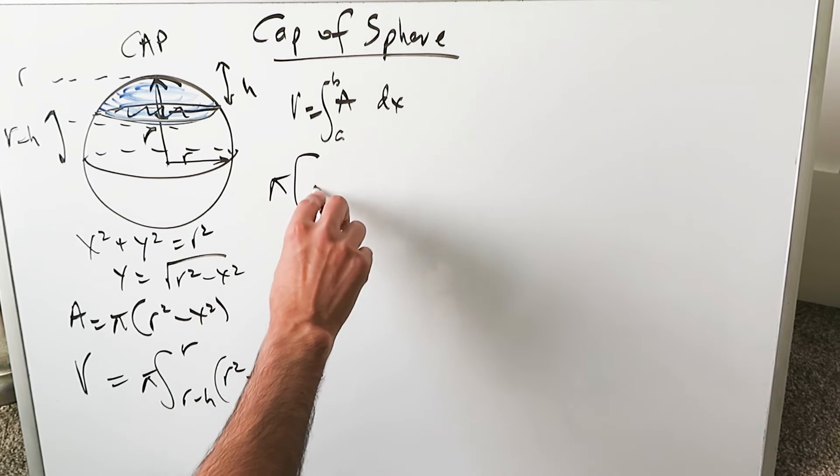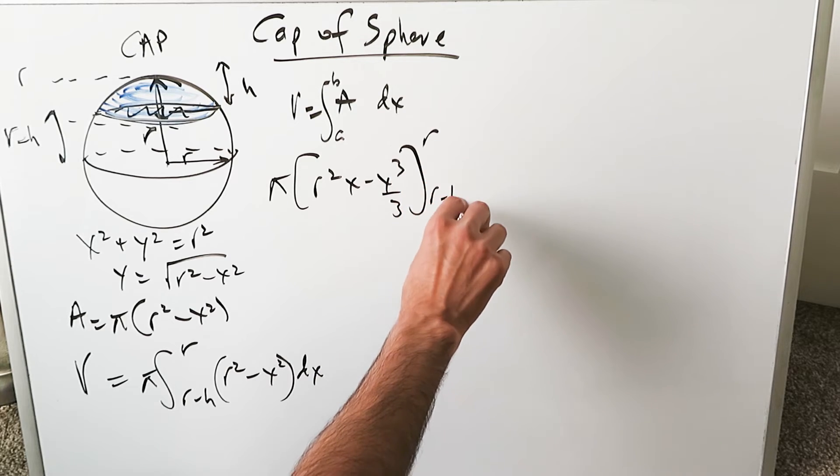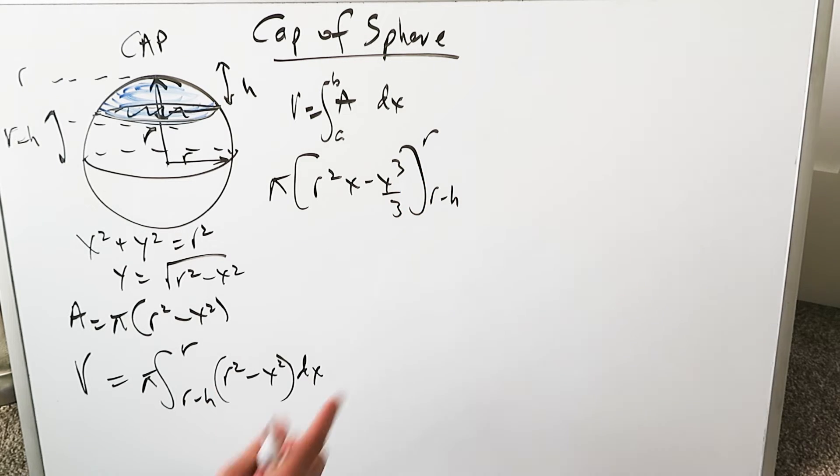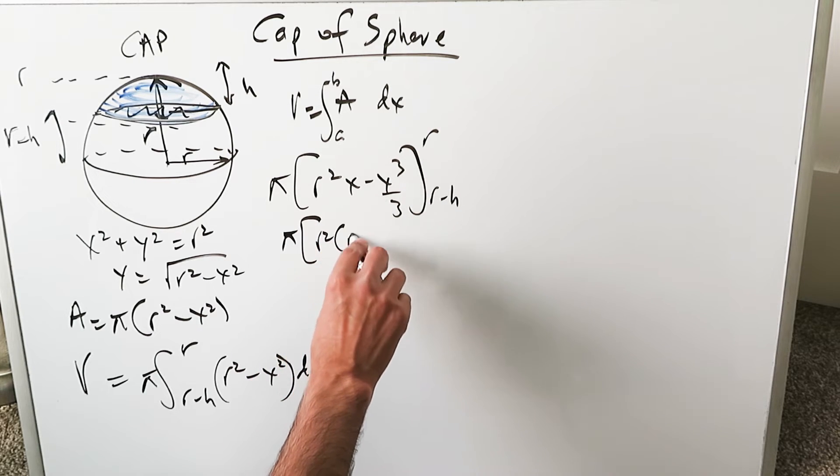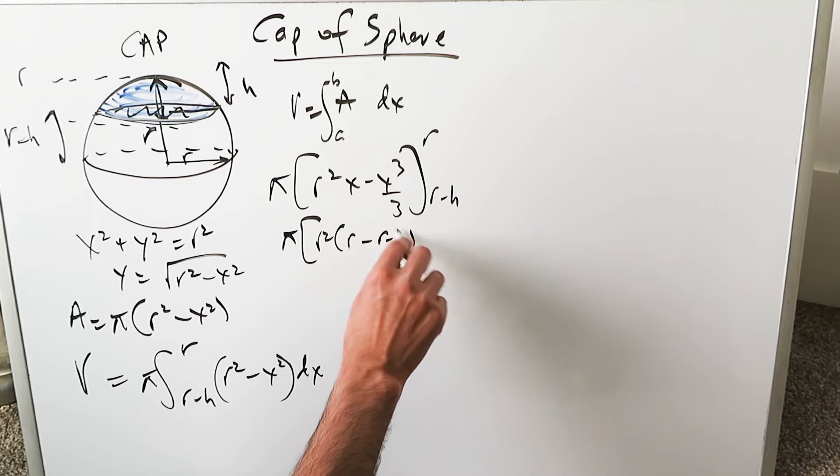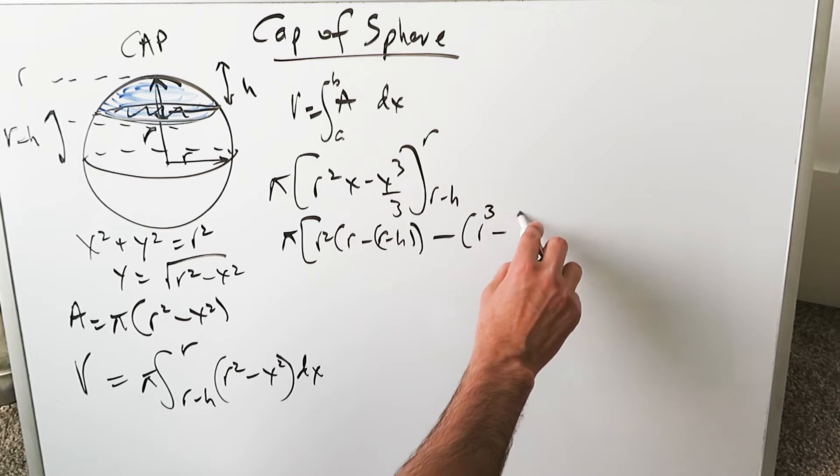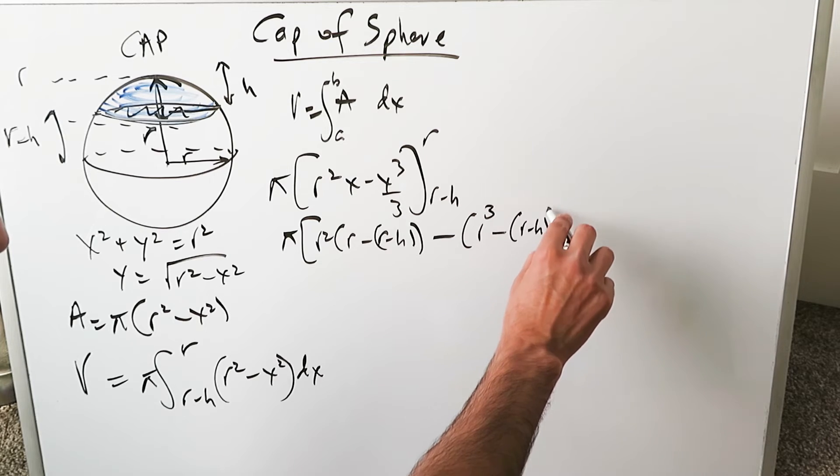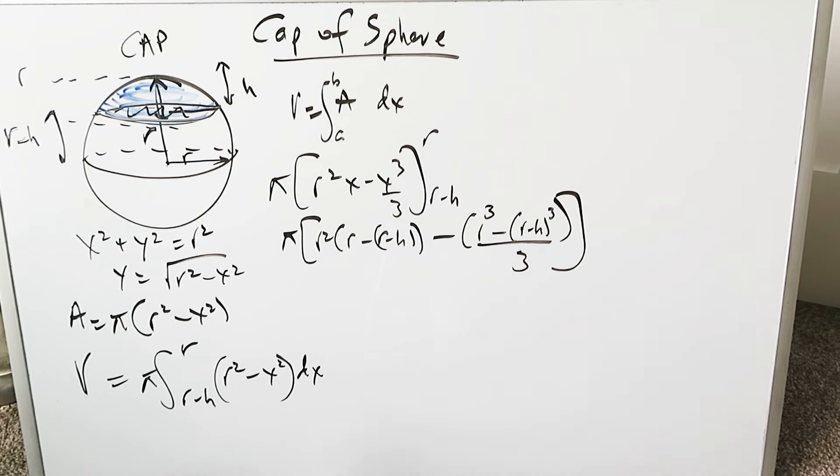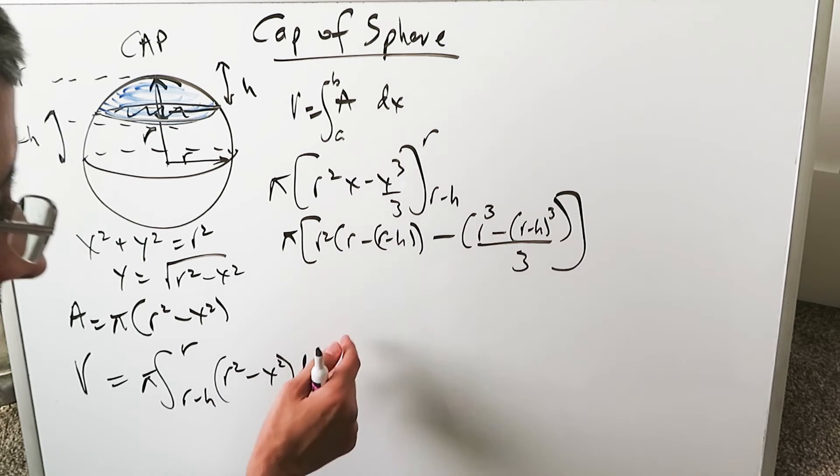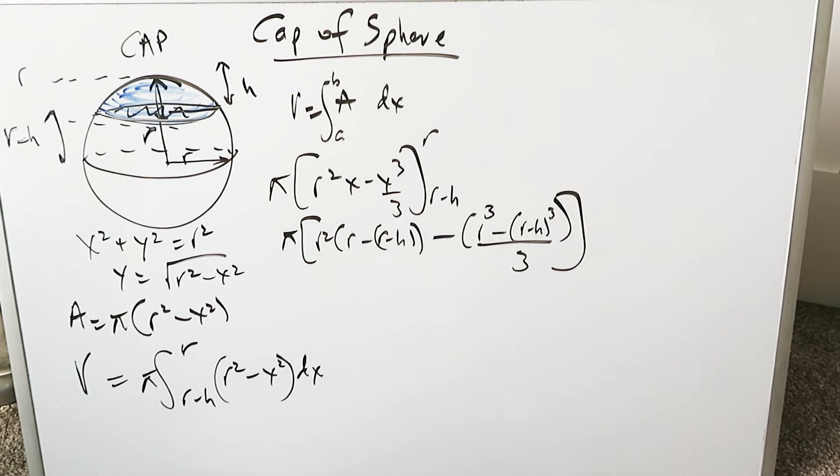You have pi R squared x minus x cubed over 3, evaluated from R minus H to R. There will be a little bit of algebra involved simply because we have now these type of values. Pi and then we have R squared into R minus R minus H, upper limit minus lower limit, minus R cubed minus another lower limit R minus H cubed over 3. What are we doing here? We're putting the upper and the lower limits in places of x but we're getting these expressions since we're dealing here with variables in terms of our limits.